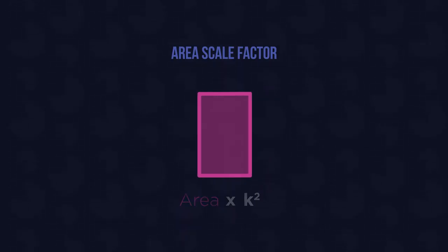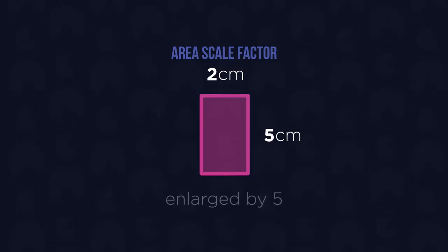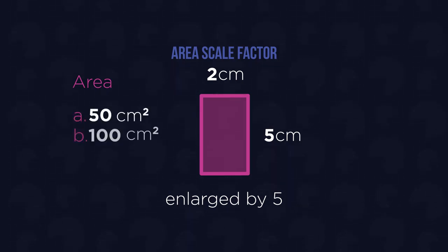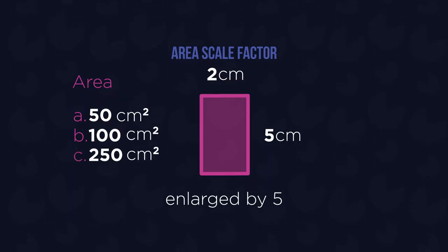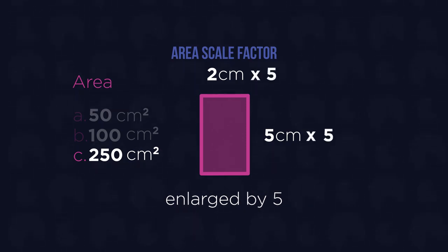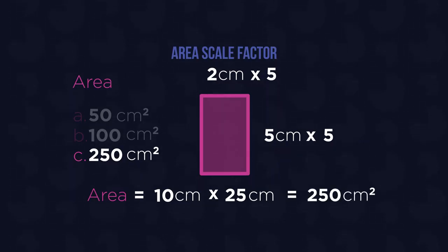Let's test it out. If a rectangle which is 2cm by 5cm is enlarged by a scale factor of 5, what will the area be? Is the answer a) 50cm squared, b) 100cm squared, or c) 250cm squared? The answer is c, because the sides of our rectangle were increased by a scale factor of 5, making the new dimensions 10 and 25, and 10 times 25 gives you 250cm squared.